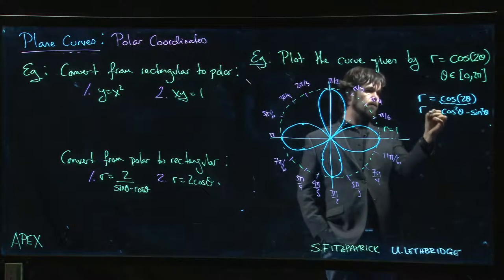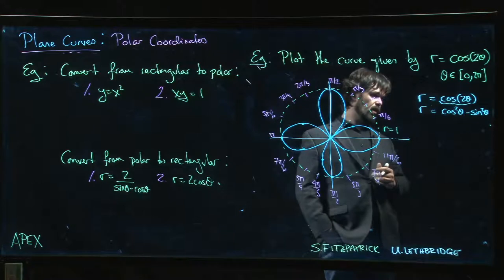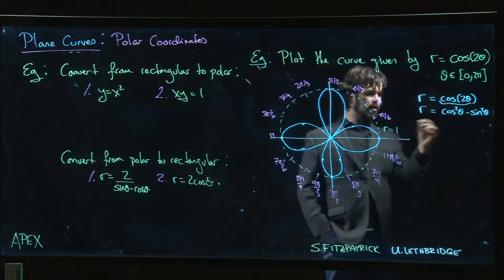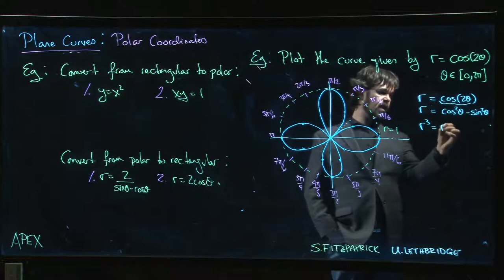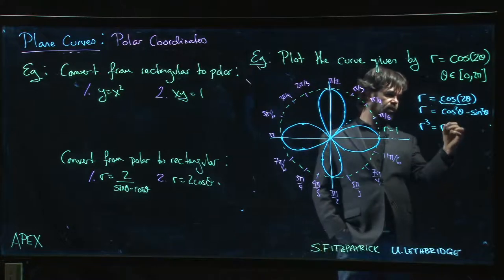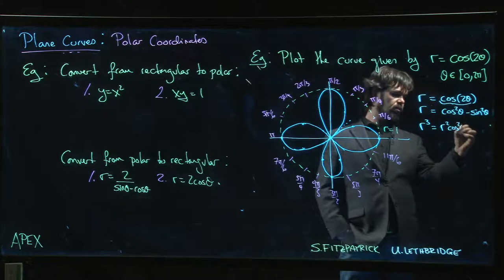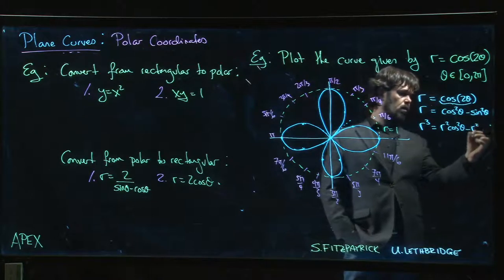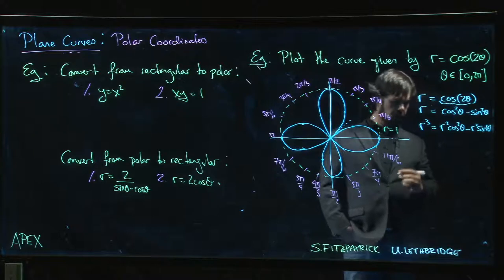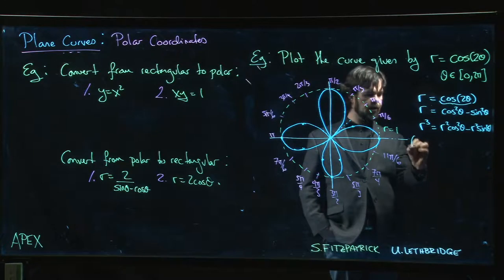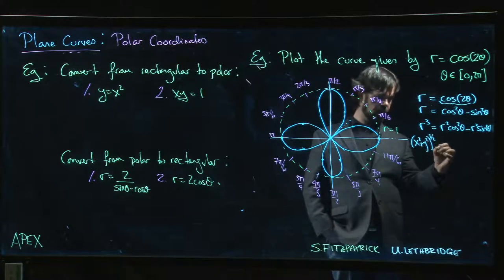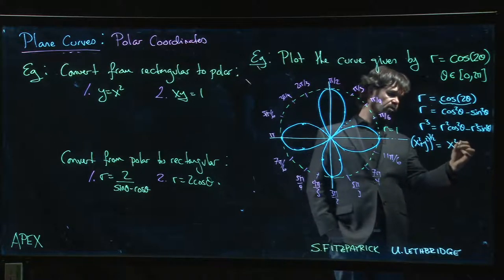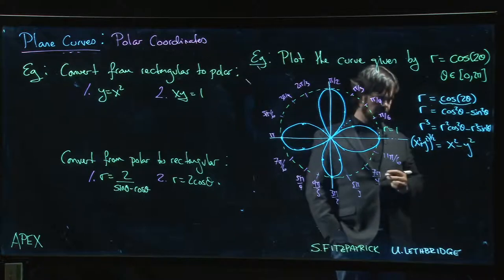So r is cos²θ minus sin²θ. What we might do here is multiply both sides by r². The reason for that is now I have r²cos²θ, which is x², and r²sin²θ. But I don't know, are you any better off? This is now (x² + y²)^(3/2) equals x² minus y².